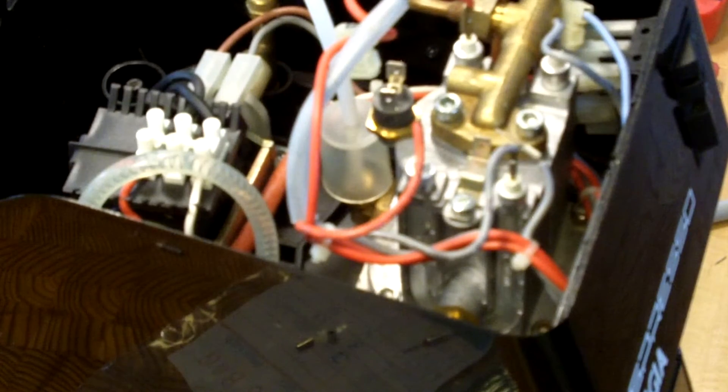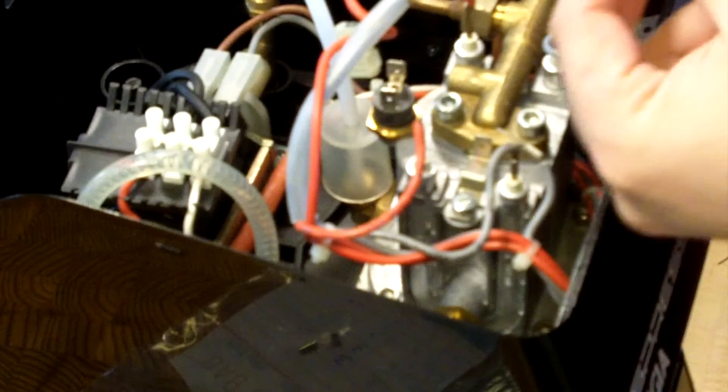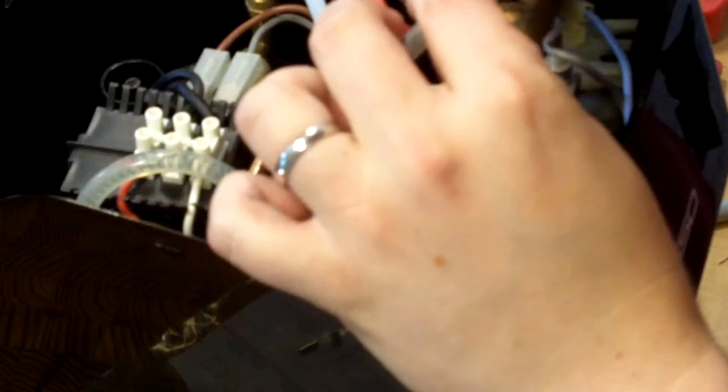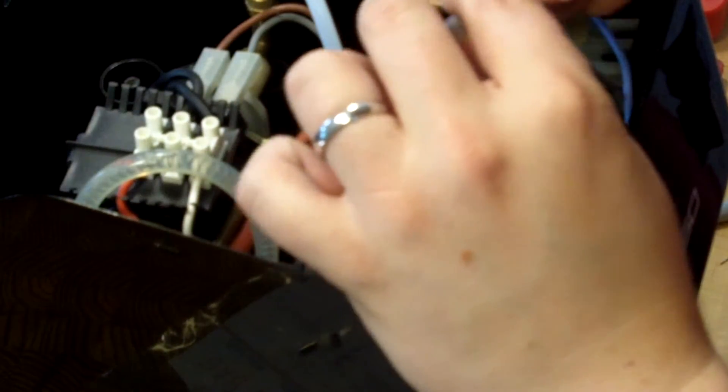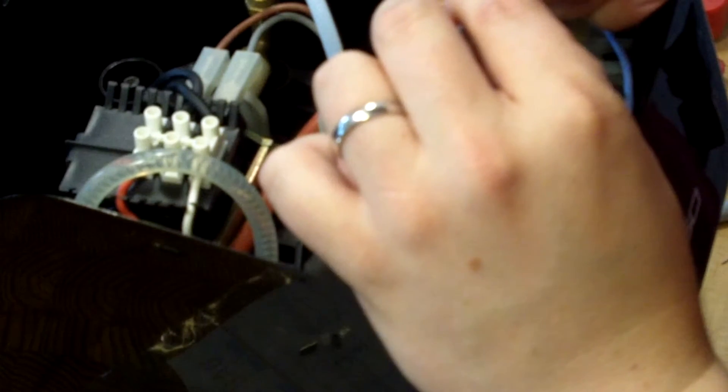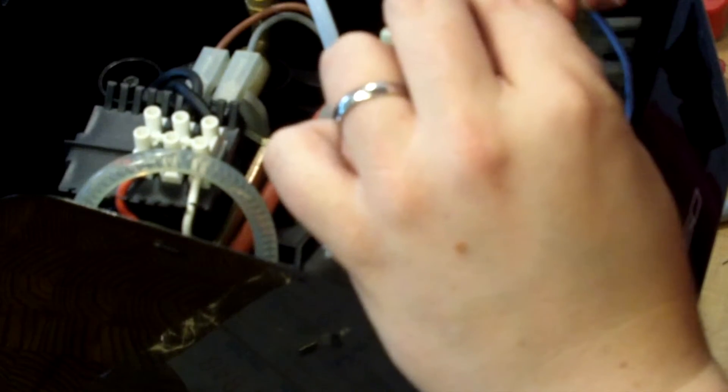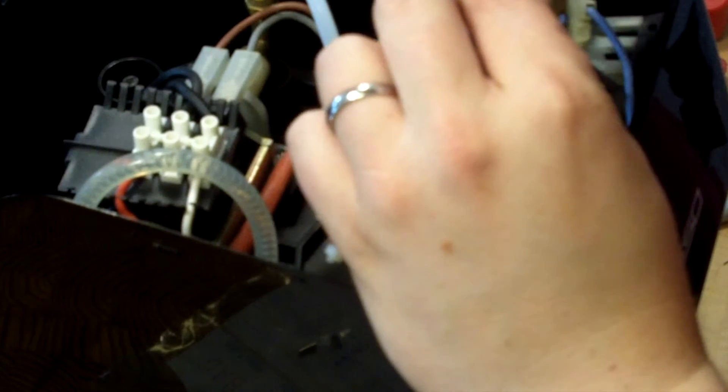See if I can get this guy off. So we'll use the smaller size. Let's see if I can get that on there. Negative. Okay, so maybe we have to go with one of the butt splices.